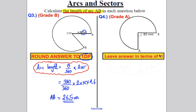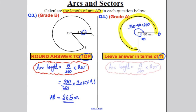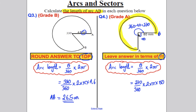Here we want the arc length AB and the answer in terms of pi. Be careful — the angle shown is 90 degrees, but that tells you how much of the circle is missing. The actual arc uses 360 − 90 = 270 degrees. So arc AB = (270/360) × 2 × π × 80 = 120π millimetres. This is a common mistake to watch out for. Underline your answer.